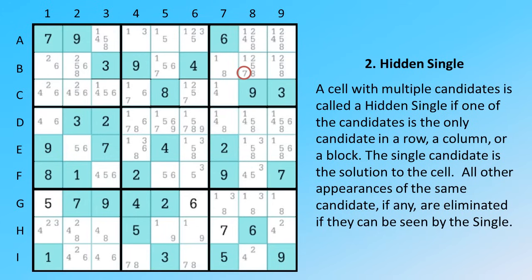A cell with multiple candidates is called a hidden single if one of the candidates is the only candidate in a row, a column, or a block. The single candidate is the solution to the cell. All other appearances of the same candidate, if any, are eliminated if they can be seen by the single.